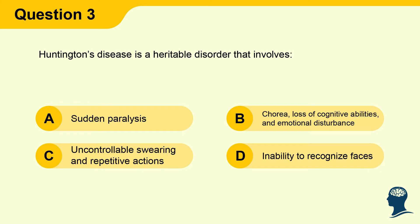Question 3: Huntington's disease is a heritable disorder that involves: A) Sudden paralysis, B) Chorea, loss of cognitive abilities, and emotional disturbance, C) Uncontrollable swearing and repetitive actions, D) Inability to recognize faces.